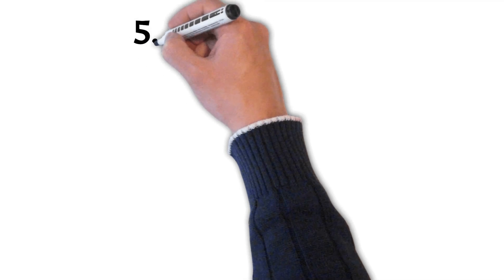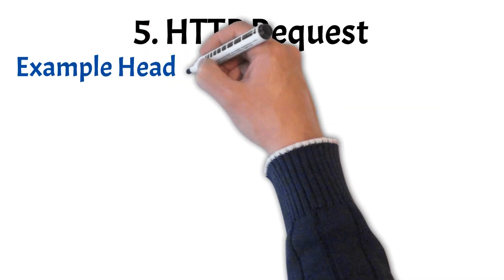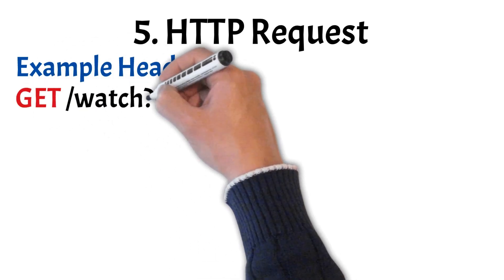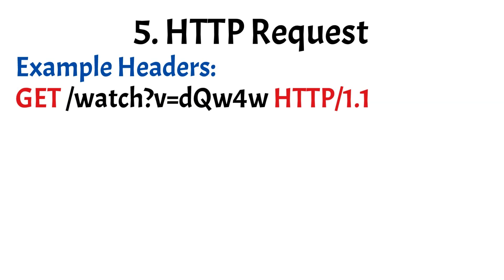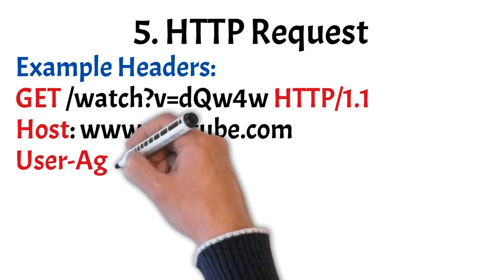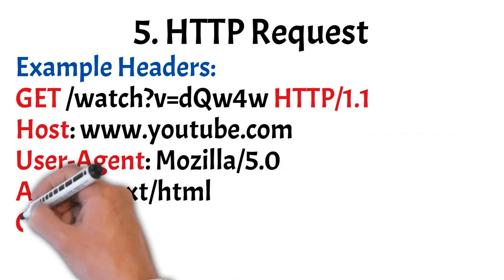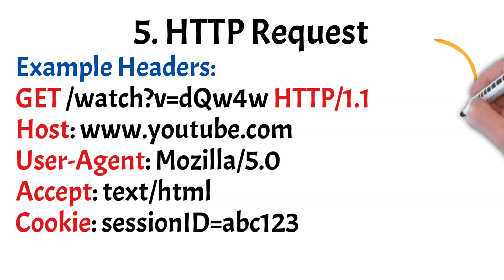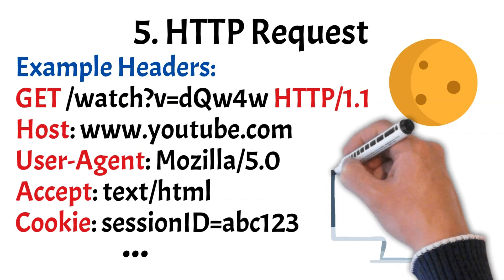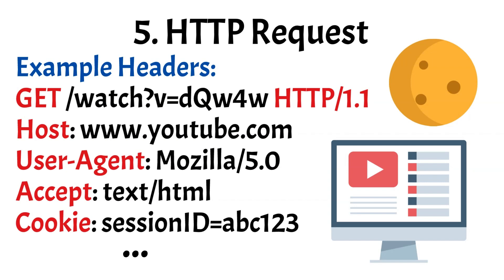Once the secure TLS connection is established, the browser is ready to send the actual HTTP request — this is where communication with the website truly begins. For example, when you access a YouTube video, the browser sends a GET request asking for a specific page. Along with it, several headers are included: Host indicates the domain name; User-Agent tells the server which browser and system you're using; Accept lists the types of content the browser can handle; and Cookie can carry session data or preferences from past visits. These headers help the server tailor its response, and the request travels securely over the network.